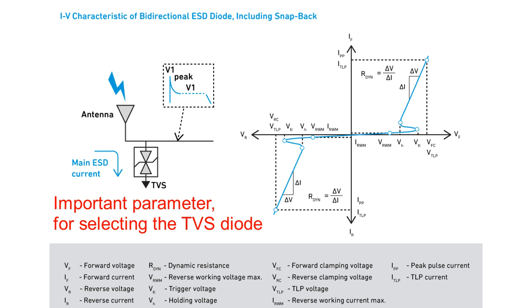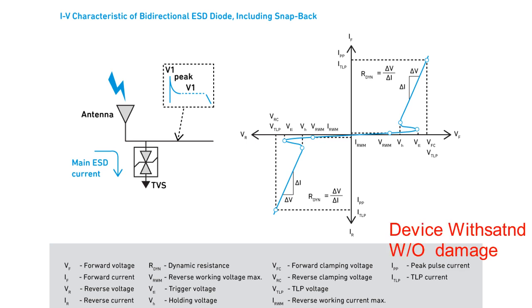Peak pulse current - this is maximum permissible surge current which the device can withstand without damage. TVS diode data sheets specify a peak pulse capability for a particular transient waveform. Mostly diodes are rated using 8/20 microsecond or 10/1000 microsecond impulse waveform.